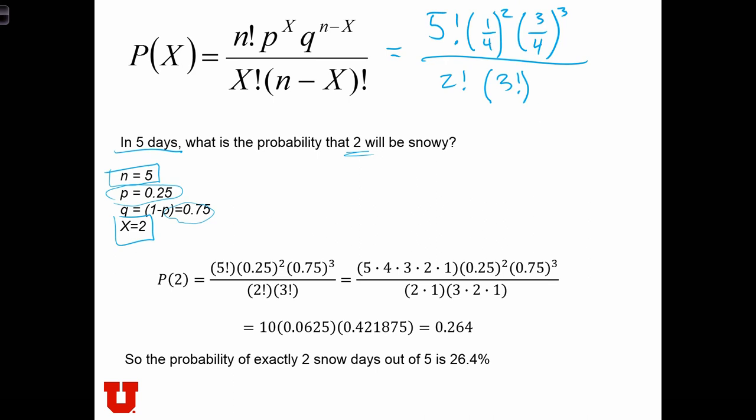Things don't cancel off as nicely as they did before, but we still do see some canceling. Look at the expansion of this fraction, which is just over here. I've expanded out the factorials. In this case, we at least see that the 3 times 2 times 1 can cancel off with the 3 times 2 times 1 there, and the 4 and the 2 can cancel off.